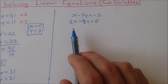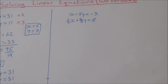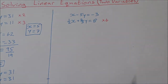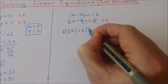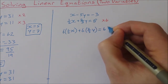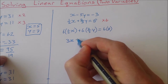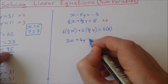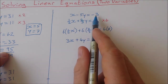This next one is a little trickier because we have fractions involved. Whenever I have fractions, my aim is to get rid of them as soon as I can. I'm going to multiply the second equation by 6, which is the lowest common denominator. So 6 times one-half x plus 6 times two-thirds y equals 6 times 8. That gives us 3x plus 4y equals 48.